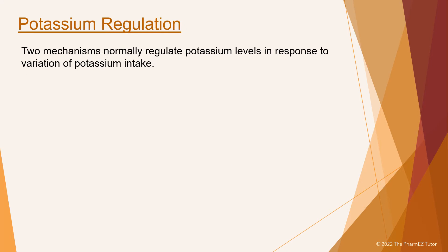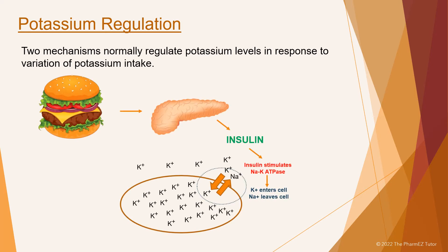Two mechanisms normally regulate potassium levels in response to variation of potassium intake. First, after a meal, ingested potassium rapidly enters the portal circulation, stimulating the pancreas to release insulin. Elevated insulin levels cause rapid transport of potassium from the extracellular space into the cells via the sodium-potassium ATPase pump. Insulin, the most important regulator, stimulates the sodium-potassium ATPase pump, resulting in enhanced potassium uptake by muscle, liver, and adipose tissue.